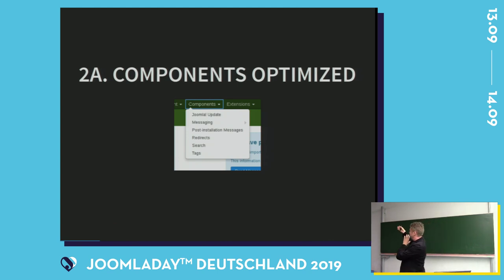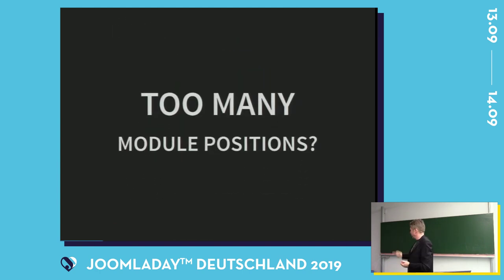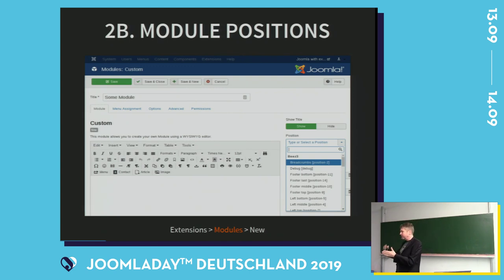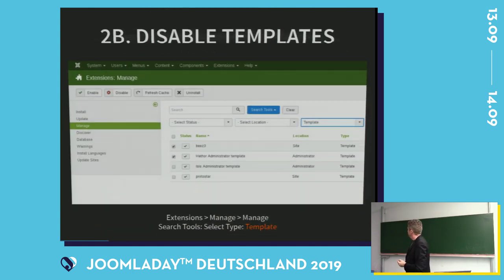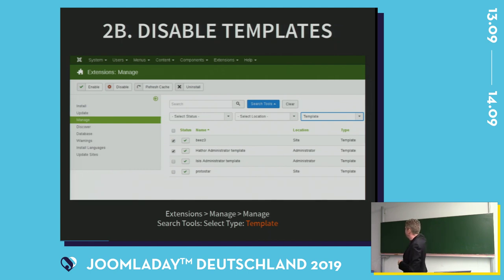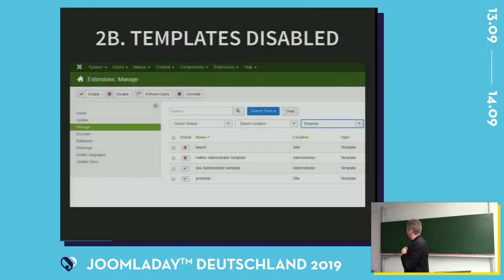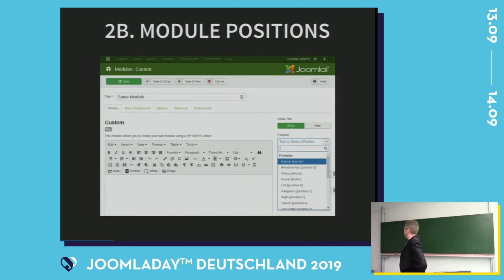We also have another menu with a lot of information, like module positions. Who has all the bs3 module positions visible in a dropdown? If you don't use bs3, disable it. Go again to Extensions > Manage > Manage and filter for templates. Disable the templates that you don't use — don't uninstall them, because they can come back with a Joomla update. So I only have Protostar and Isis active. When I create a new module and look at positions, I only see Protostar's positions, which is much easier.